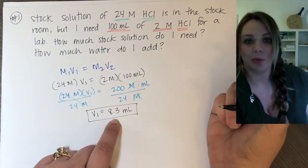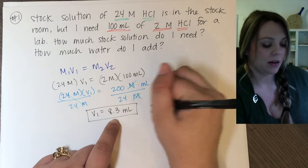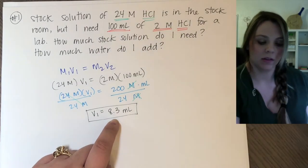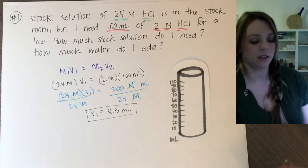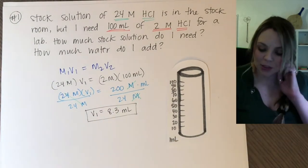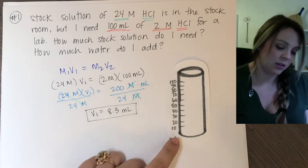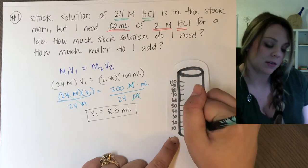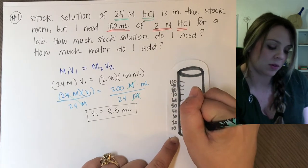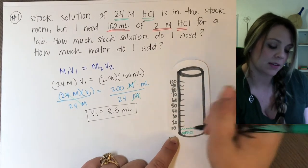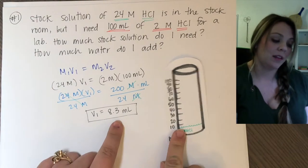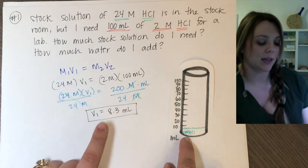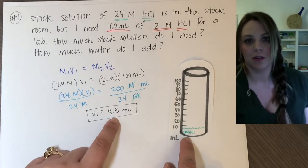So, I need to add 8.3 mils of my 24 molar hydrochloric acid. So if I was filling this thing up, I only actually need 8.3 mils. So this much down here is going to be my 24 molar hydrochloric acid. That's it. Then, I need to figure out, that was the answer to my first question. How much stock solution do I need? I need 8.3 mils of my stock solution.